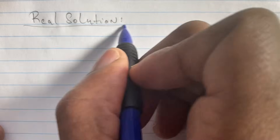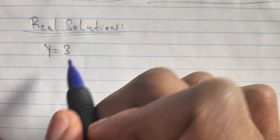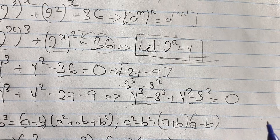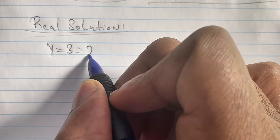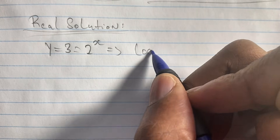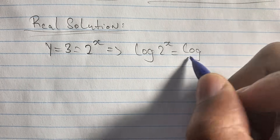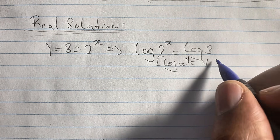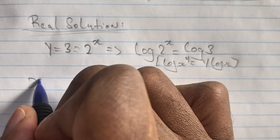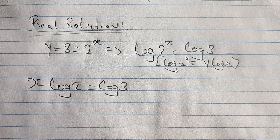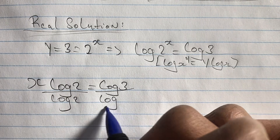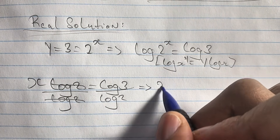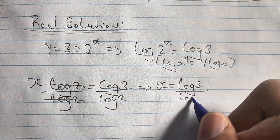Since the complex solution is not real, we use our real solution y = 3 to find the value of x. Recall that we set 2 to the power of x equal to y, so now 2^x = 3. We solve for x using logarithms: log(2^x) = log(3). Applying the logarithm power rule, x·log(2) = log(3). Dividing both sides by log(2), we get x = log(3) / log(2).